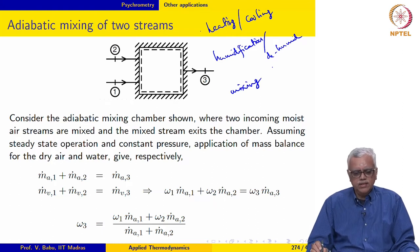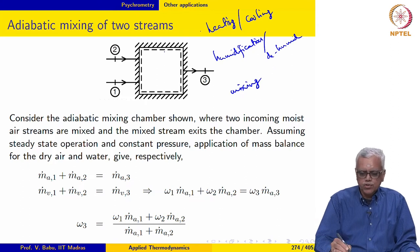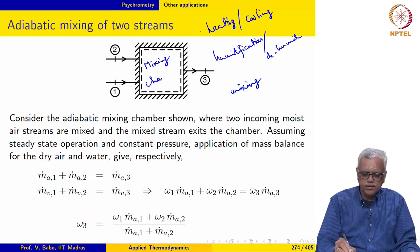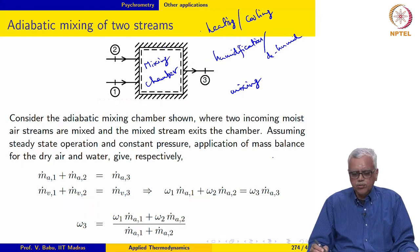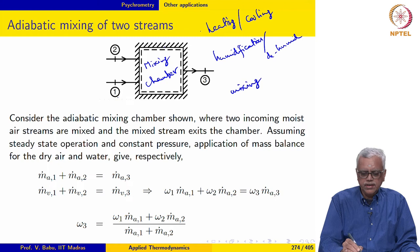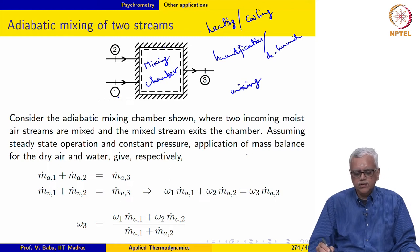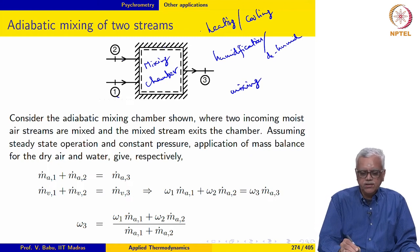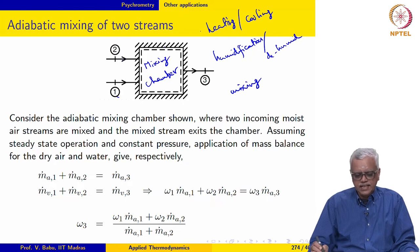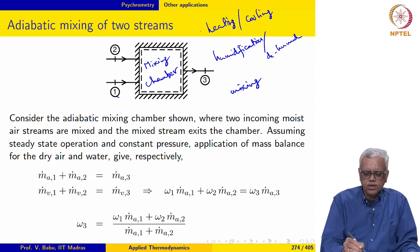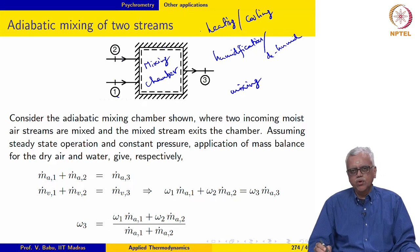That is the application we are going to consider first. Here we have an insulated mixing chamber. We have an air stream coming in at state 1, another air stream coming in at state 2, and an exiting air stream. Both streams 1 and 2 are actually moist air streams.